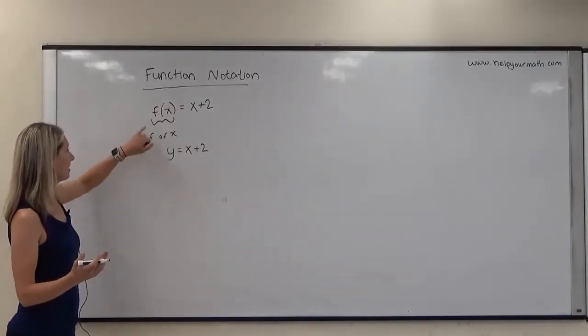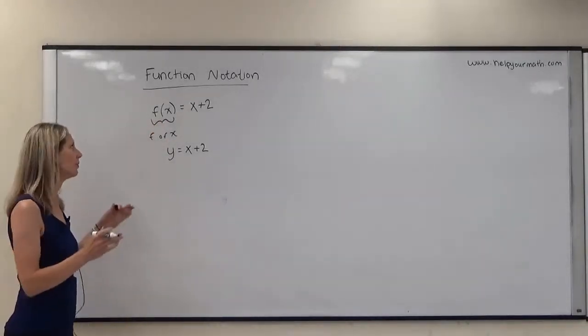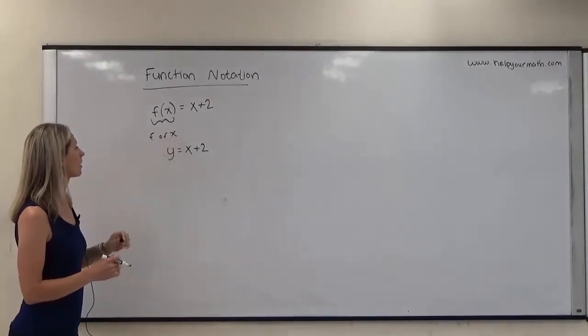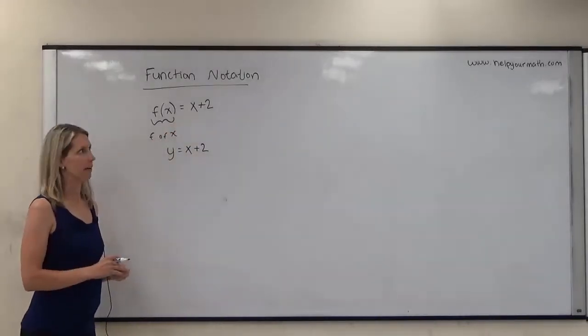And again, very common mistake. People think that f of x is multiplication, that we're multiplying f times x. That's not true. It's just the name of the function of the specific variable and then it defines it for that variable.